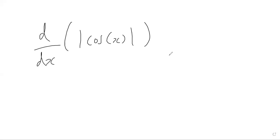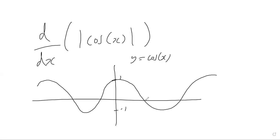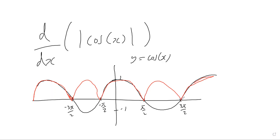Before we go ahead with the differentiation, let's think about the domain in which this function will have a well-defined derivative. We know that a graph of y equals cos of x looks something like this, with maxima and minima at one and minus one, and roots at pi over two, three pi over two, and so on. A sketch of the modulus of cos of x is just the reflection of the negative parts upward, so this red line represents y equals the absolute value of cos of x.